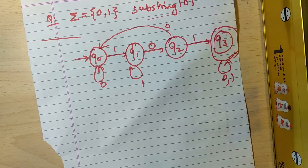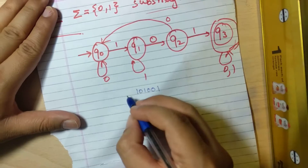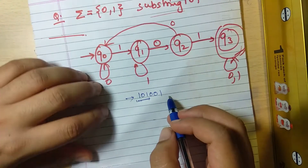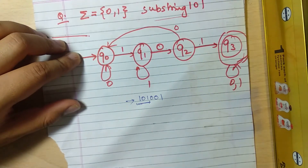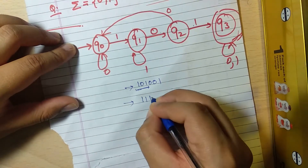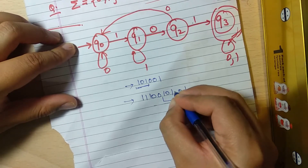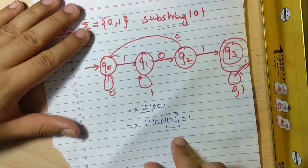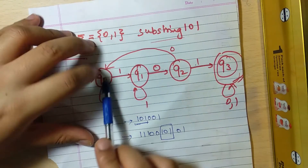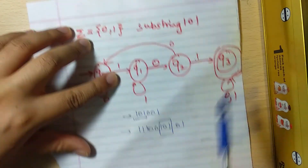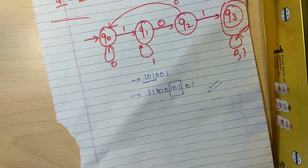For q3 (the final state), just make self-loops for both '0' and '1'. Let's verify: take the string '101001' — it has the substring '101', so the DFA should accept it. Tracing through: 1→q1, 0→q2, 1→q3 (accepted). Let's also try '1110011010 1' — it contains '101' and the DFA satisfies it correctly.